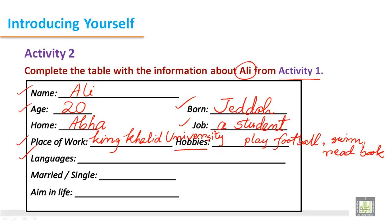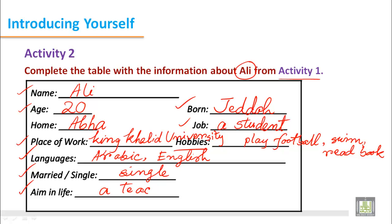What languages does he speak? He speaks Arabic, his mother tongue, and also English. Is he married? He has written that he is single. The final item is his aim in life — what he wants to be. He has a goal: he wants to be a teacher. So his aim in life is to be a teacher.